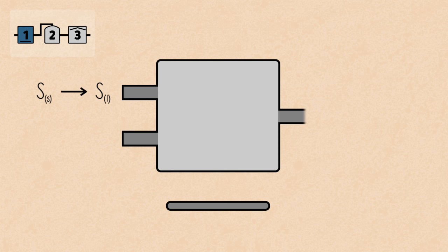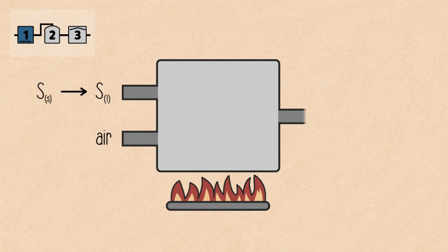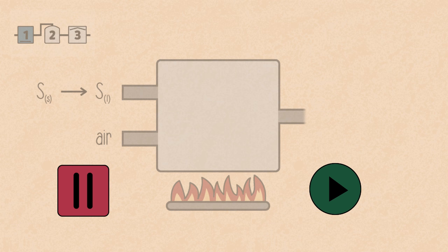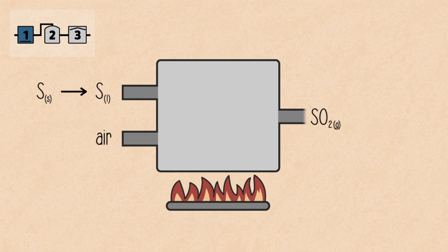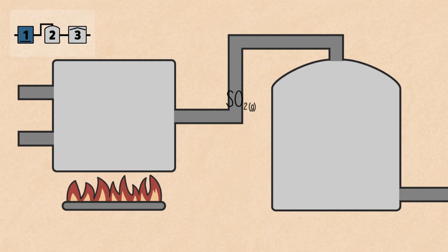It is melted and then combusted in oxygen. What do you think is formed at this stage? Could you write a chemical equation for this? Pause, think and continue when you're ready. The product formed at this stage is sulfur dioxide and the chemical equation for this is shown. Did you get it right?